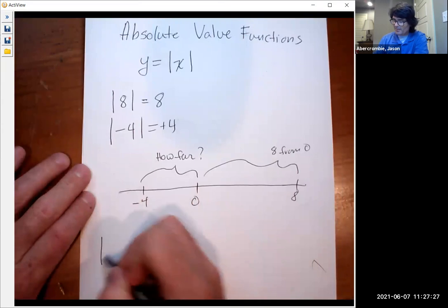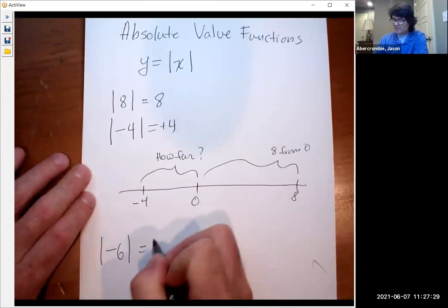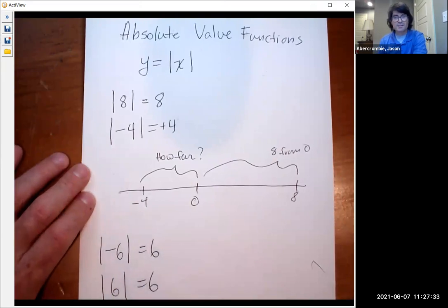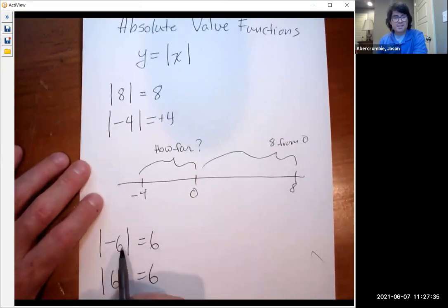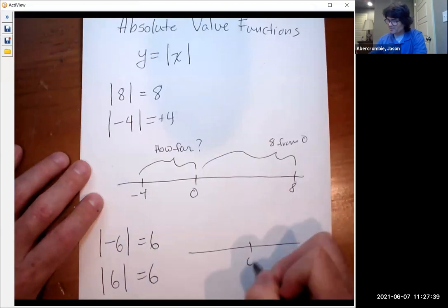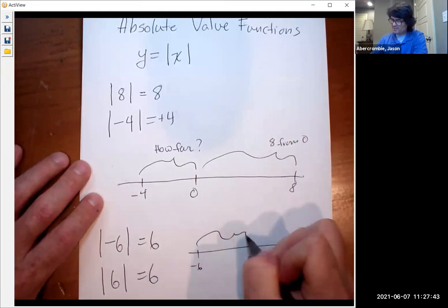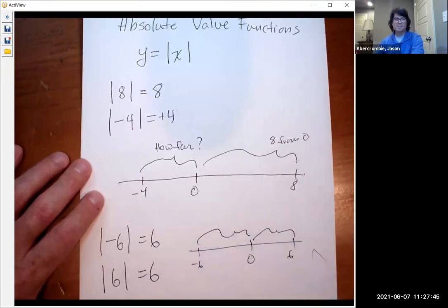That's why if you have the absolute value of negative six, it's six. And the absolute value of six is also six because on the number line, negative six and positive six are both the same distance from zero. Here's zero, here's six, here's negative six. This distance and this distance are the same.